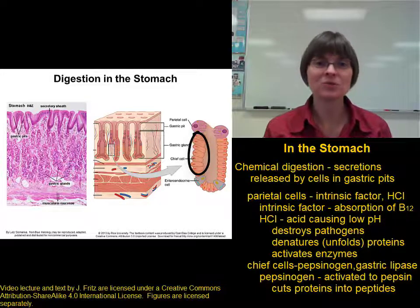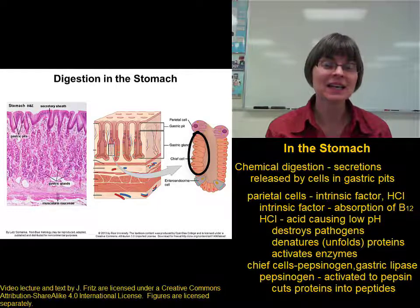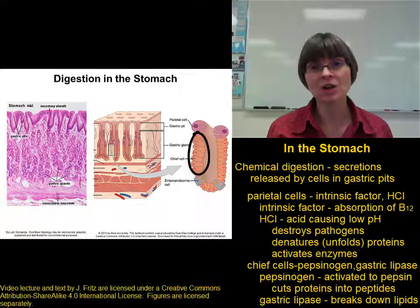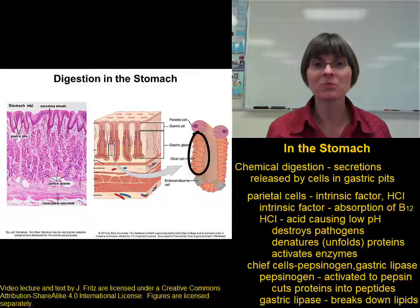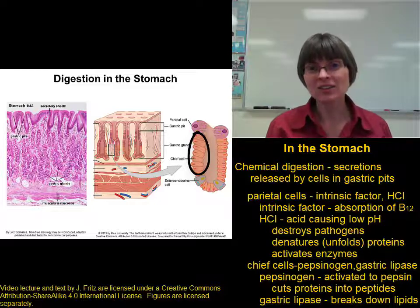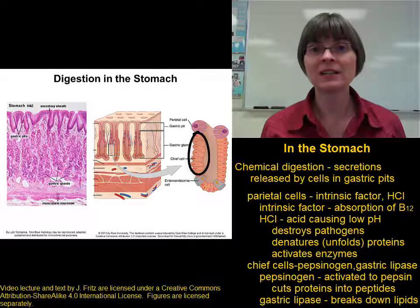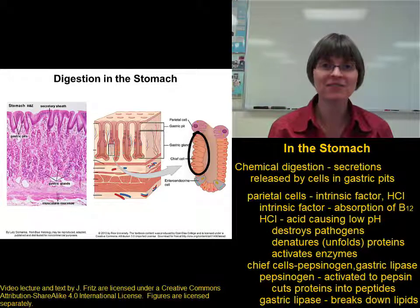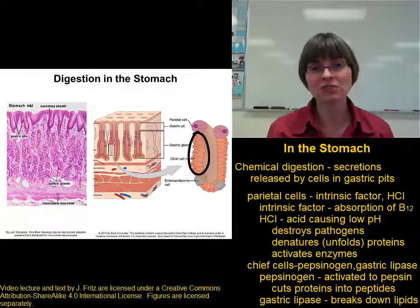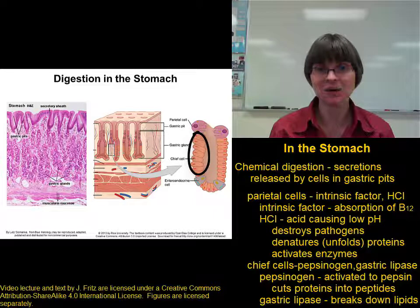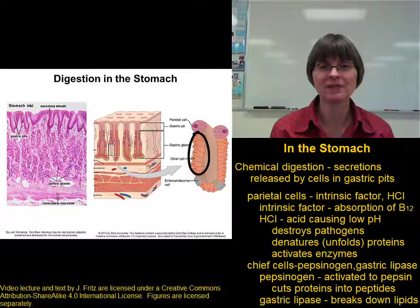The second secretion released by the chief cells is gastric lipase. Gastric means it's made in the stomach, and lipase is an enzyme that breaks lipids or fats down into fatty acids. Gastric lipase is actually much more important in infants than in adults, because infants have a very high fat diet — there's a high percentage of fat in the milk they drink — so they need more lipase to break that down. Adults don't have such a high fat diet, so we don't need gastric lipase as much.